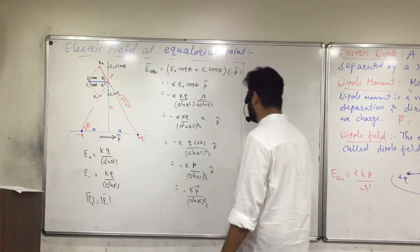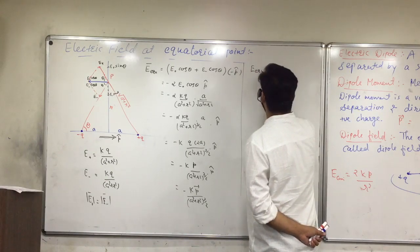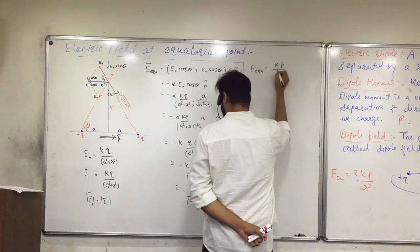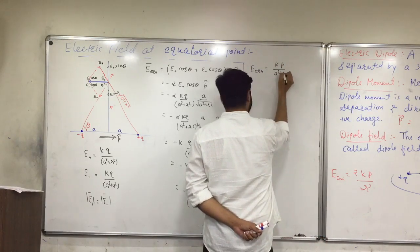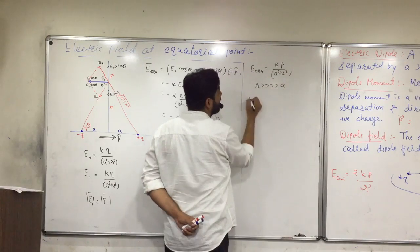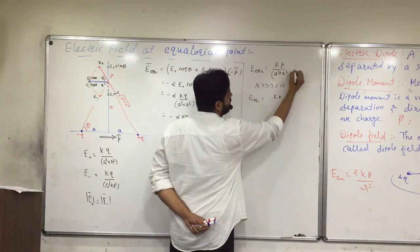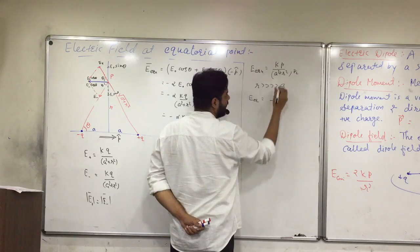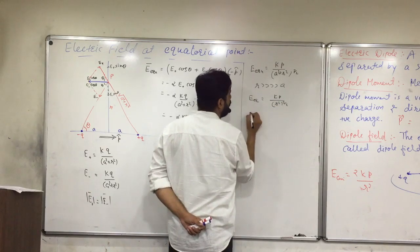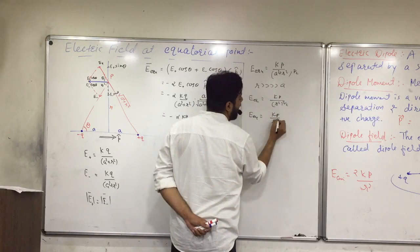If I look at only the magnitude of E equatorial, it equals kp upon (a squared plus r squared) raised to 3/2. If r is very, very greater than a, then 'a' can be neglected, so E equatorial equals kp upon r squared raised to 3/2, which is kp upon r cube.